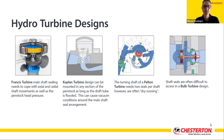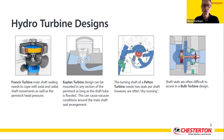In 1913, Victor Kaplan created a low head version of the Francis turbine by using an adjustable propeller-type blade to harness water flow energy. Runner blade pitch is hydraulically adjustable to help control water flow and turbine speed, along with wicket gates. It is best suited for low head, high flow applications. The design means the machine can be mounted at any section of a penstock as long as the draft tube is flooded; however, this can cause vacuum conditions around the main shaft sealing arrangement.